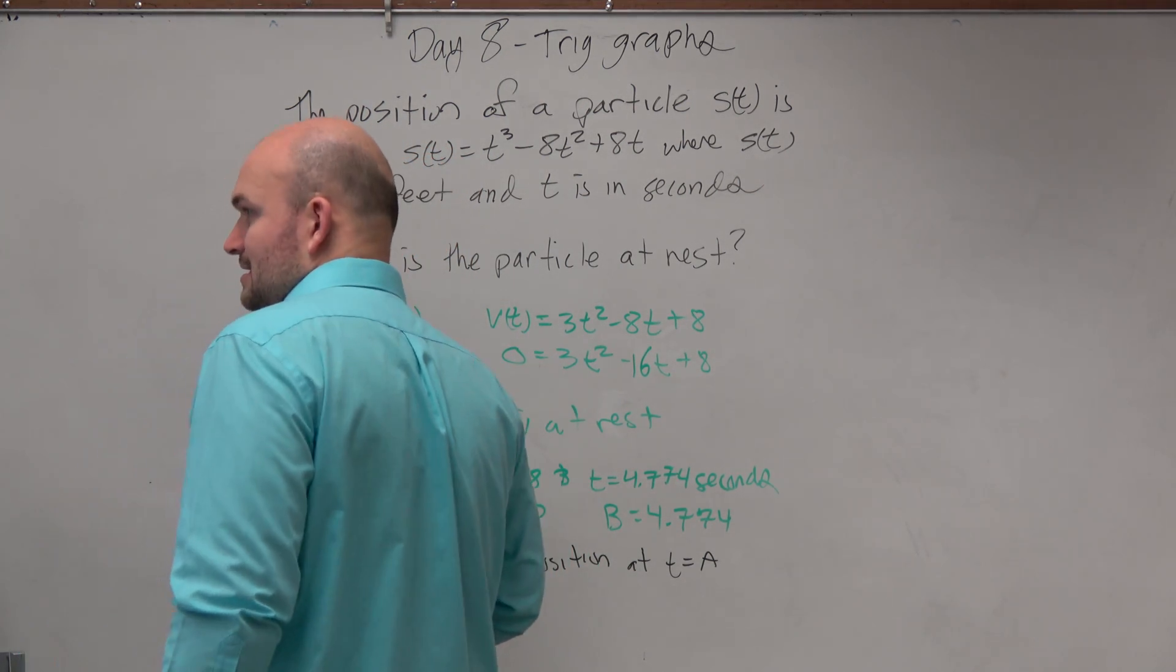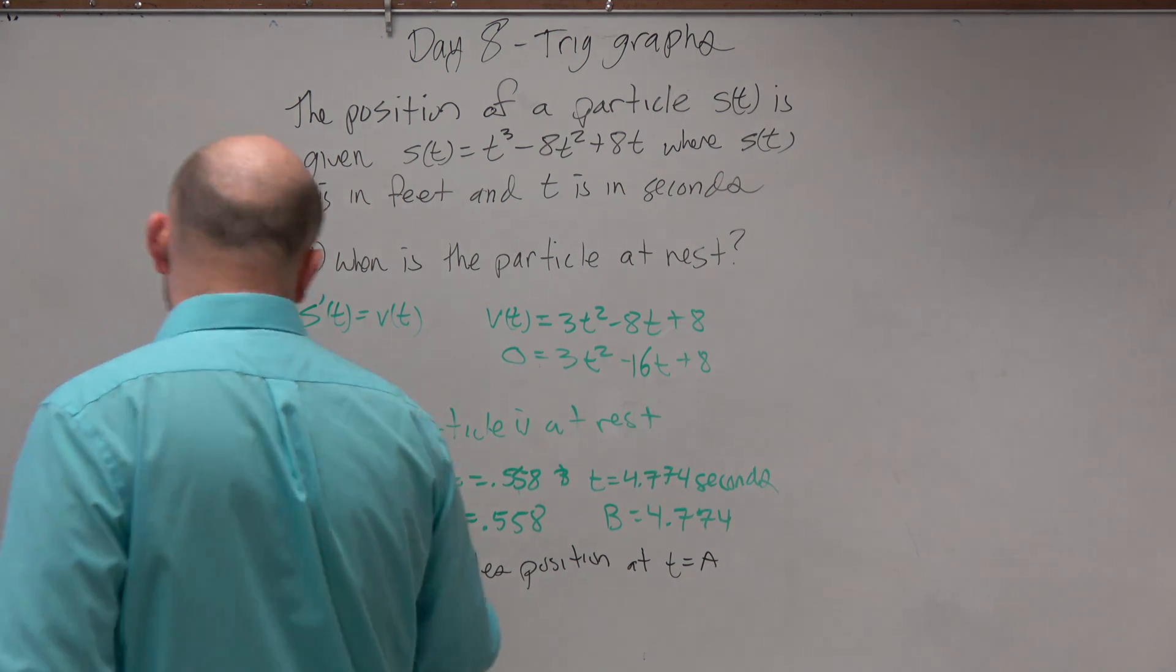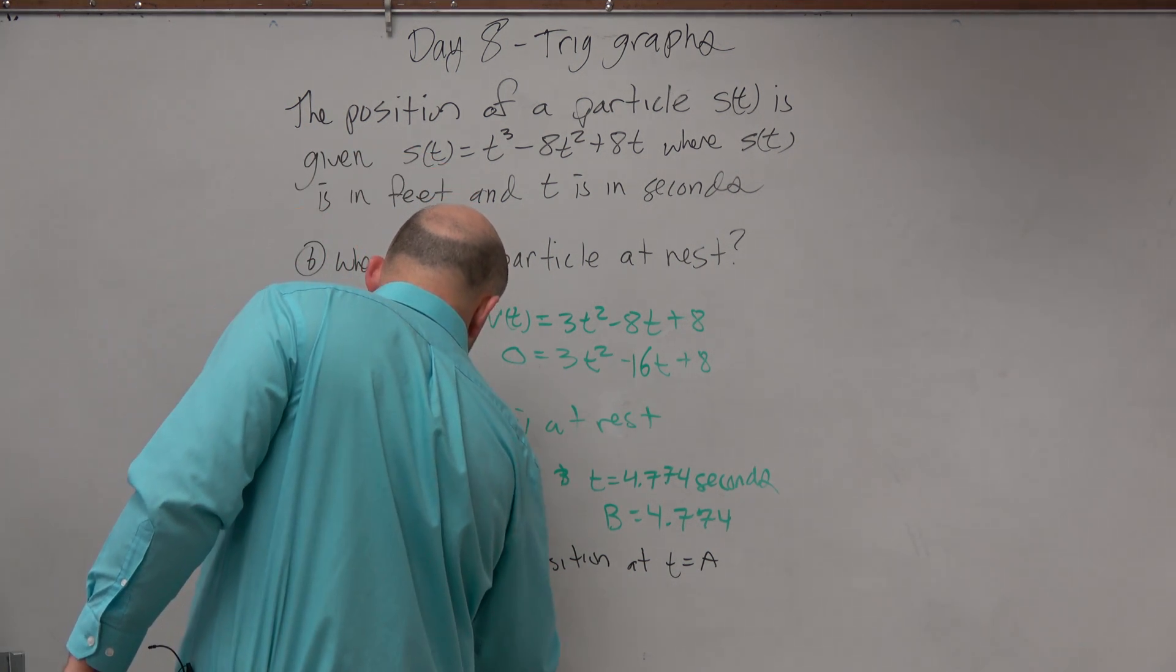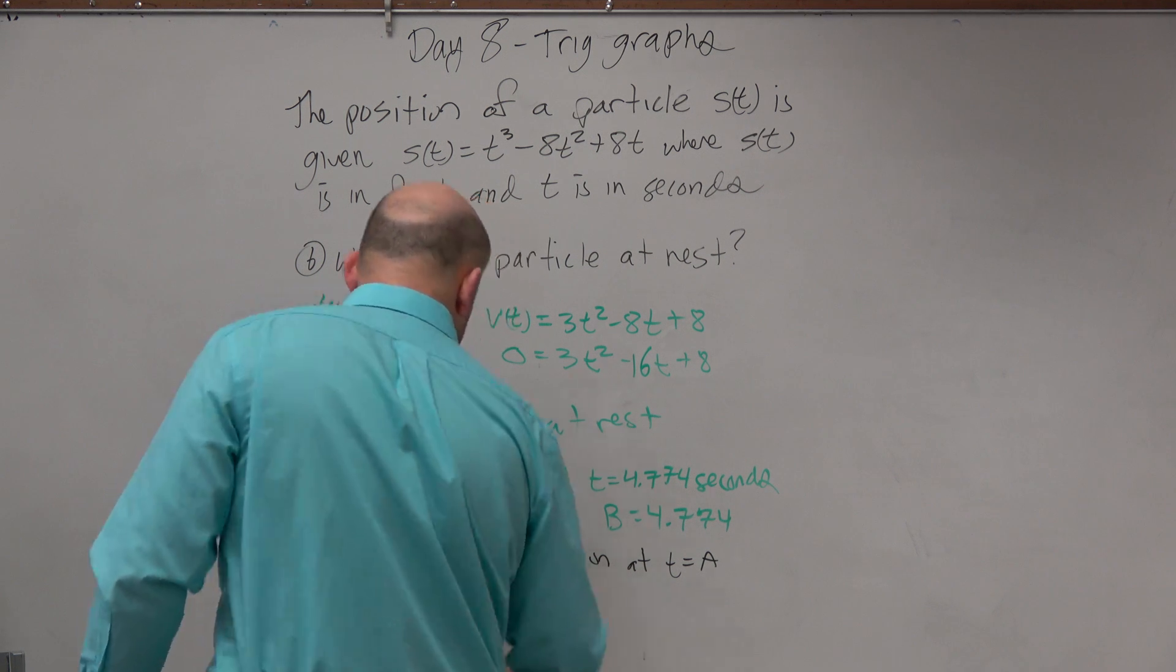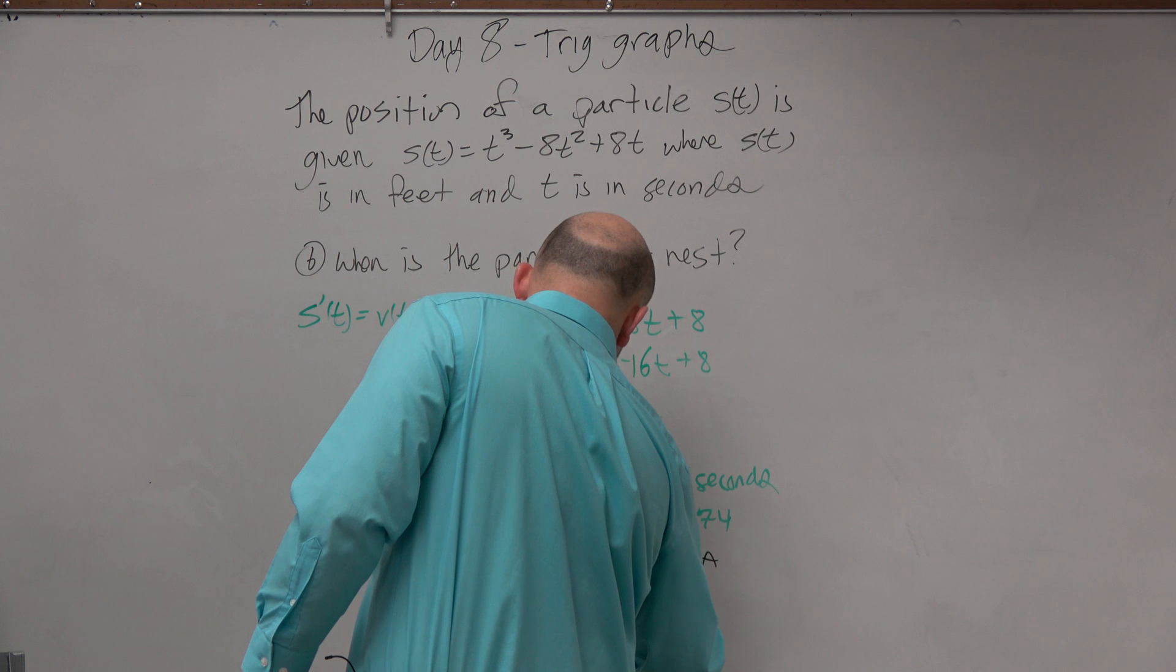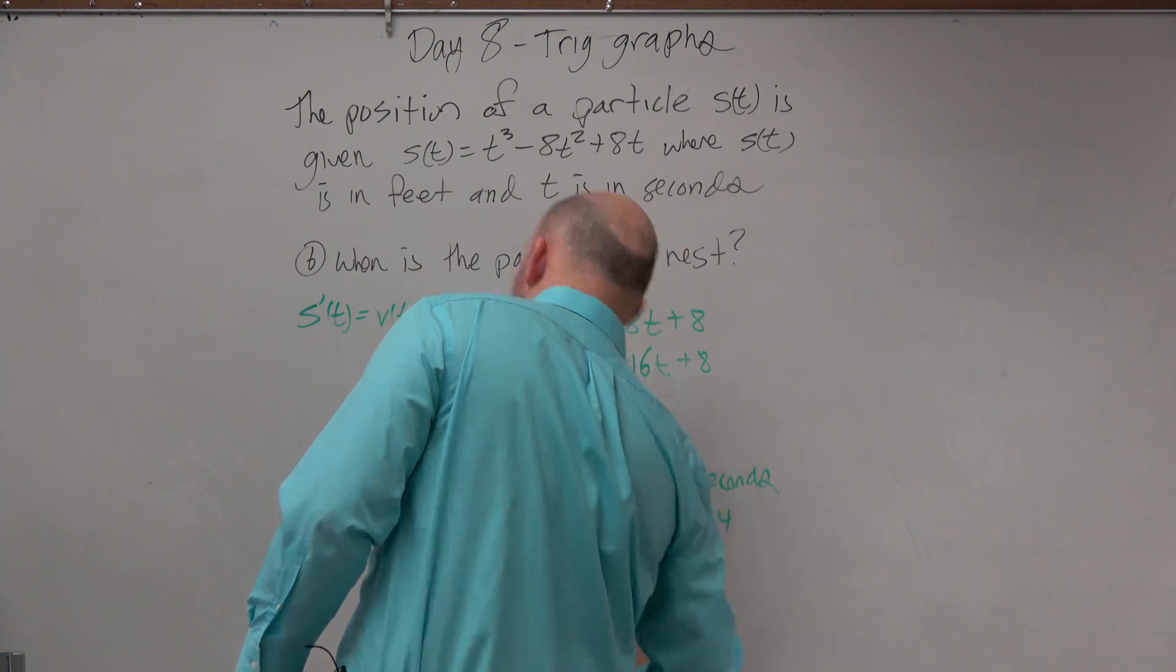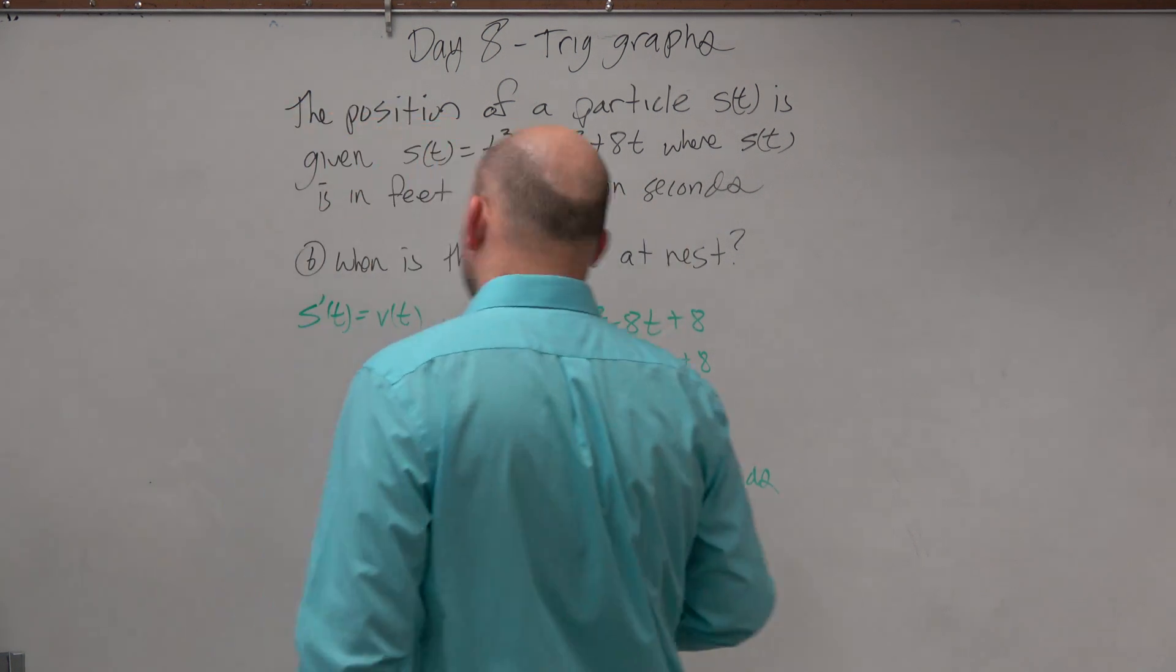Anyway, at t equals a is 2.14 and feet, negative 35.33.